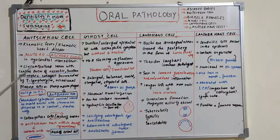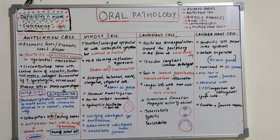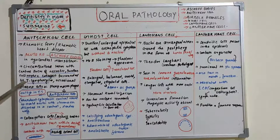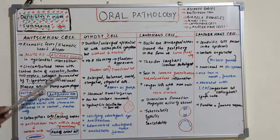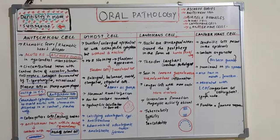Ashoff's bodies are circumscribed lesions with a central focus of necrotic, swollen eosinophilic collagen, which is surrounded by T lymphocytes, occasional plasma cells, and plump macrophages. These are the description of Ashoff's bodies, seen in acute rheumatic fever in the myocardial interstitial space. These macrophages are particularly known as Anishkov cells.